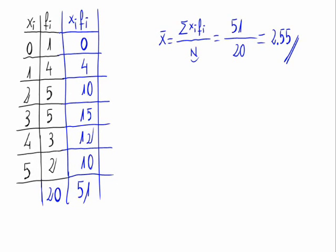Let's calculate the absolute deviation from the statistic distribution we see right here with x sub i and f sub i. To calculate it, we need the mean which we've already calculated in a previous video. It is 2.55.